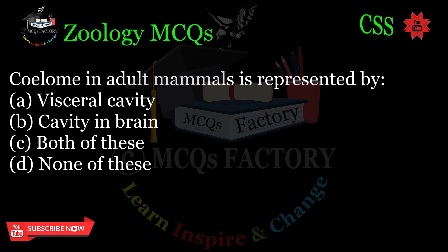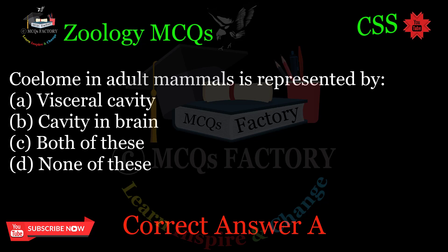Coelome in adult mammals is represented by: A. Visceral cavity. B. Cavity in brain. C. Both of these. D. None of these. Correct answer: A.